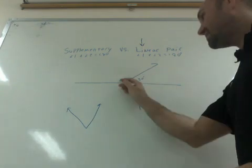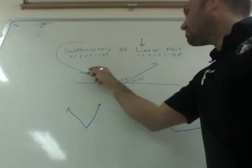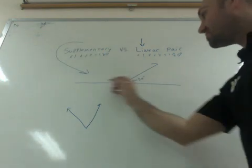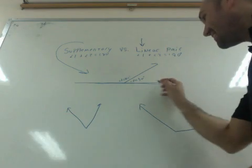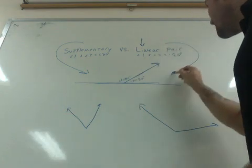And yes, these add up to 180 degrees, so this is supplementary. Now, because it's also formed on a line, and they're adjacent to each other, it's also a linear pair.